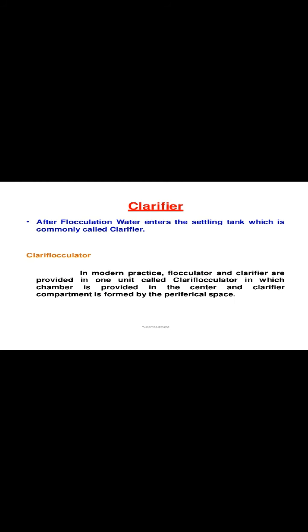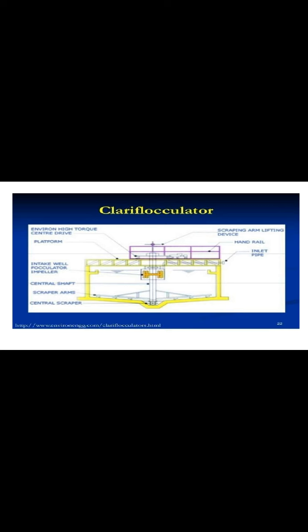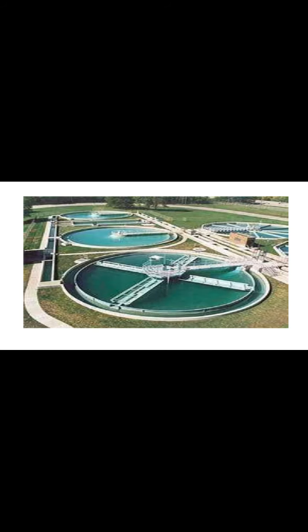Vertical baffle tanks are also used in flocculation tanks, where water flows vertically with baffle walls creating turbulence to facilitate mixing. After flocculation, water enters the settling tank — commonly called the clarifier. In modern practice, the flocculator and clarifier are combined into one unit called a clariflocculator, in which a flocculation chamber is provided in the center and the clarifier compartment is formed by the peripheral space.